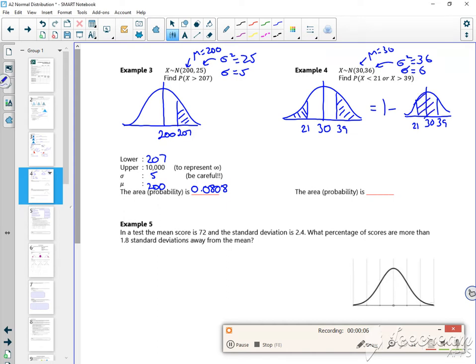So that's the same as one minus between 21 and 39. So if I set my lower to be 21, my upper to be 39,